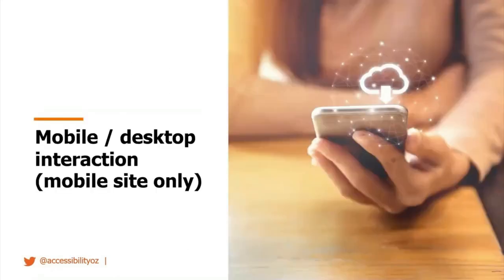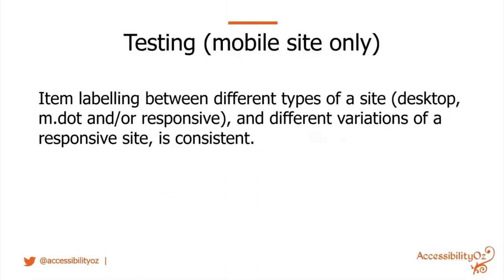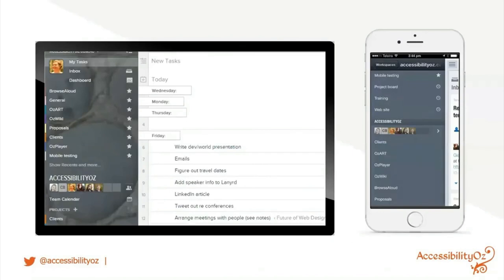Finally, for mobile desktop interaction — only applicable to mobile sites — item labeling between different site types and variations must be consistent. An example is Asana: on desktop I would use "My Tasks," but on the mobile app there is no "My Tasks."